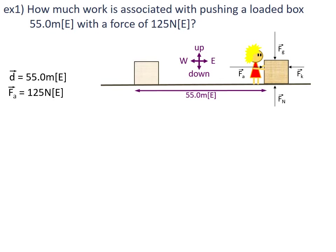We don't know if that force is going all into accelerating the box or into friction. We're not exactly sure what it's going into, but we know what the force was being applied to the box. We know the displacement. So our equation is simply work equals force times displacement.